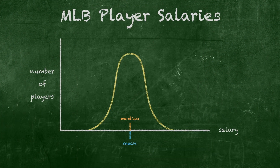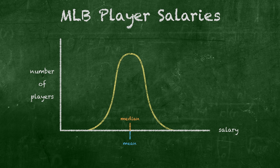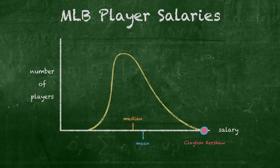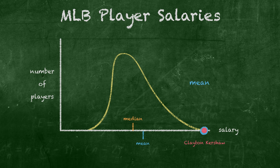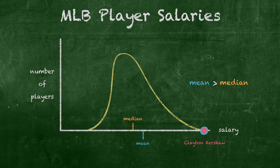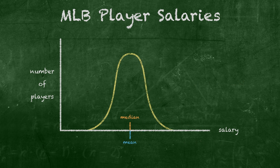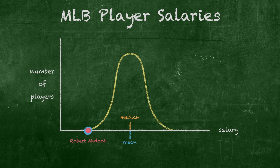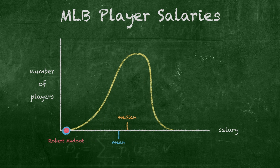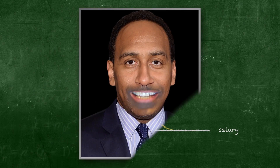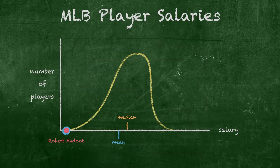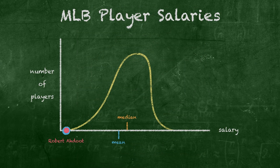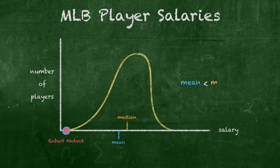Note the position of the mean and the median in these different distributions. Extreme high values, like the salary of our boy Kershaw, drags the mean higher, but has less of an effect on the median. So when we're skewed to the right, we generally say the mean is greater than the median. And then, by that logic, extreme low values would pull the mean down. Which is why a left-skewed histogram generally shows the mean to be less than the median.